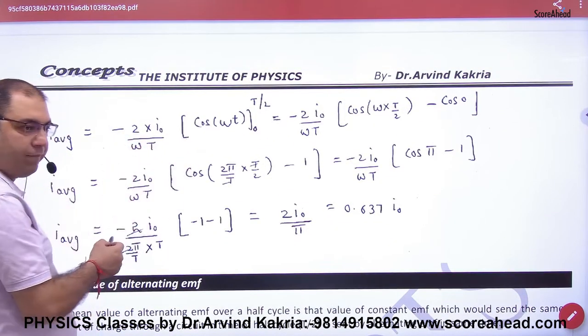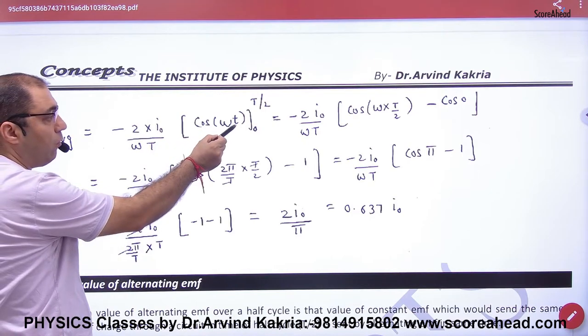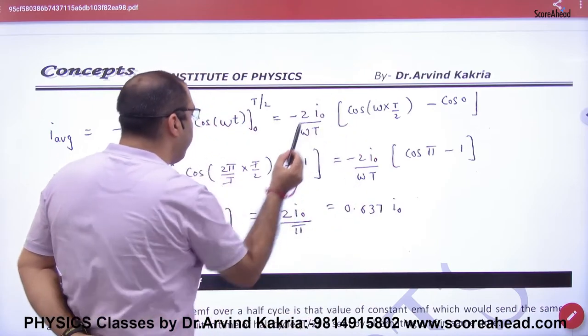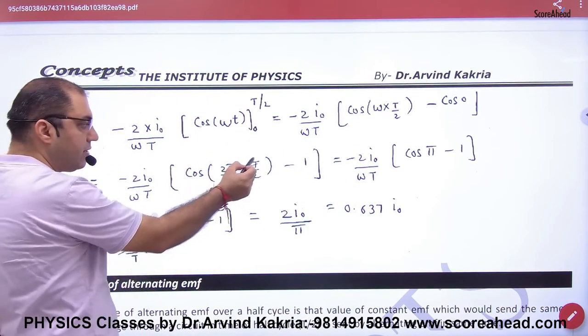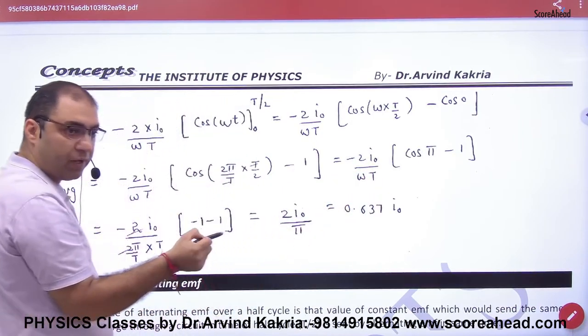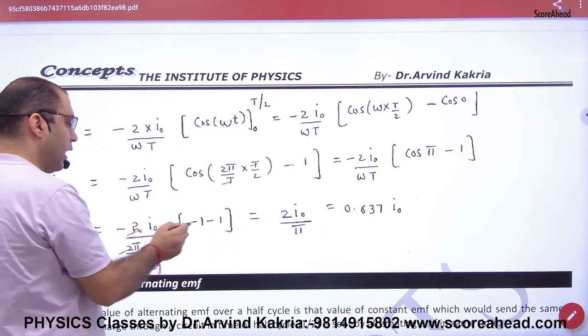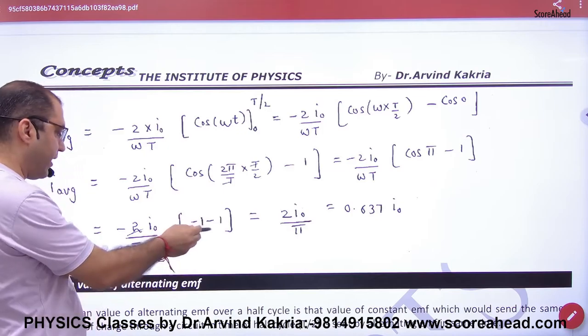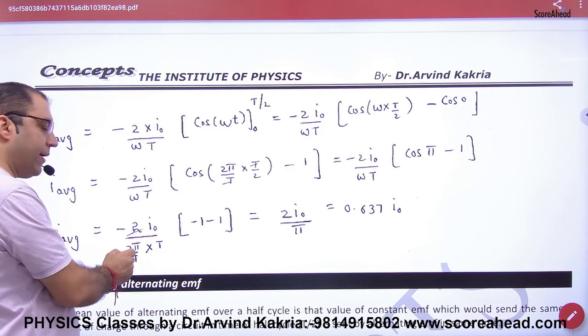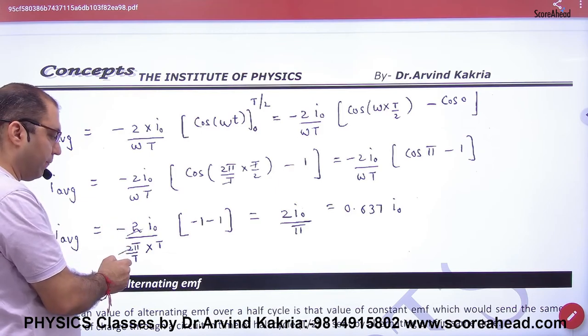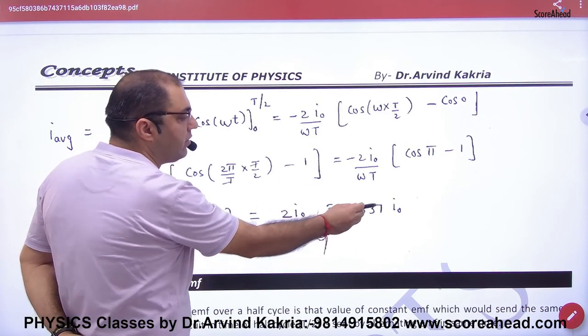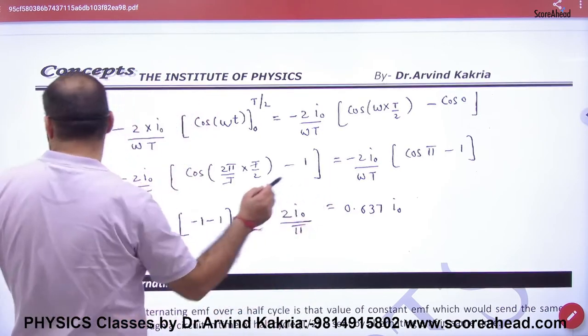I not out, sine omega t integration is minus cos omega t divided by omega, and T by 2 limits. Minus out, cos omega T, one time upper limit, one time lower limit. Here omega is 2 pi by T, T cancels, 2 and 2 cancel, cos pi is minus one. So here minus one minus one is minus two, minus and minus is plus two. And omega 2 pi by T, 2 and 2 cancel. So the answer is 2 upon pi, which is 0.637 I not.